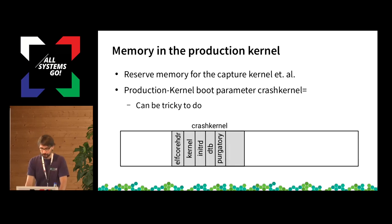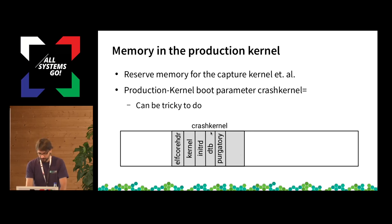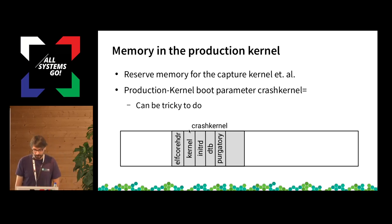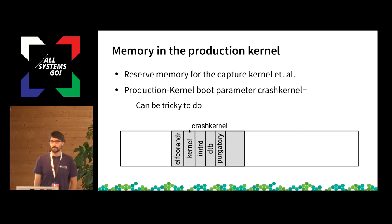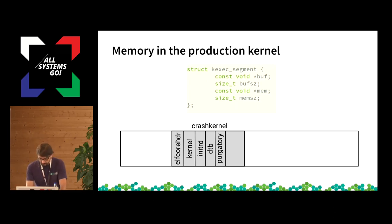When you boot your production system, you pass a kernel parameter called crashkernel, which creates a reserved memory area. That reserved area is not used by the production system. It can be tricky to size correctly — too big wastes memory from your production system, too small and the capture system won't start. Inside this reserved memory area you can see different segments, called kexec segments, which are a data structure shared between user space and the kernel.